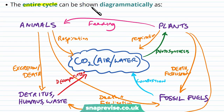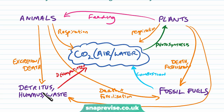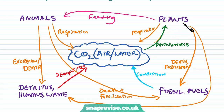The entire cycle with all of these processes can be shown diagrammatically. It looks complicated, but each part only covers the steps we've talked about. Animals and plants both undergo respiration to release CO2 into the air. Animals can eat plants, transferring carbon from plant biomass to the animal. Both can die and be broken down by detritivores and decomposers, which also release CO2. Fossil fuels come from dead plants and animals and can be combusted to release CO2. Plants also take CO2 out of the atmosphere in photosynthesis — and that's the only real process that removes CO2.